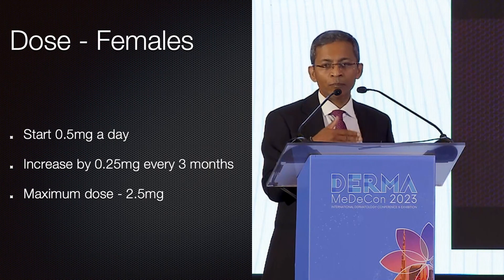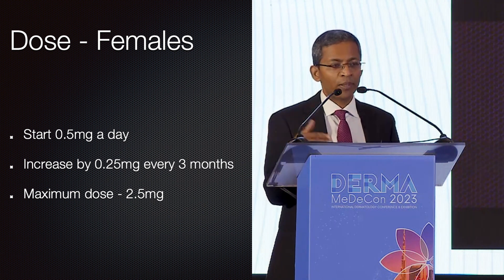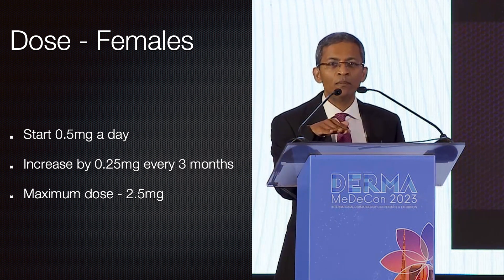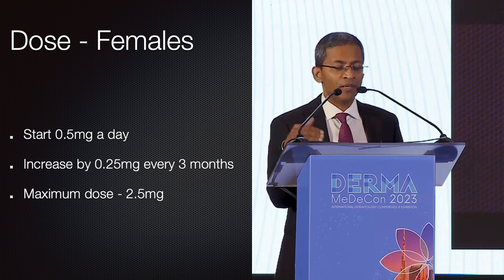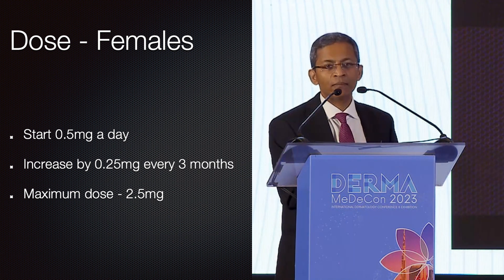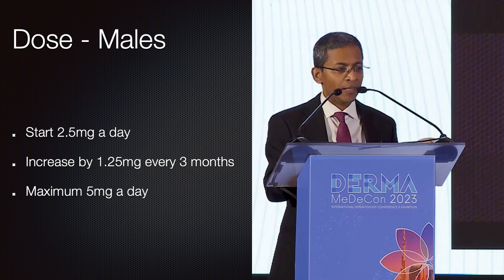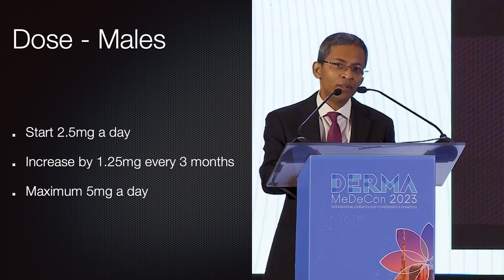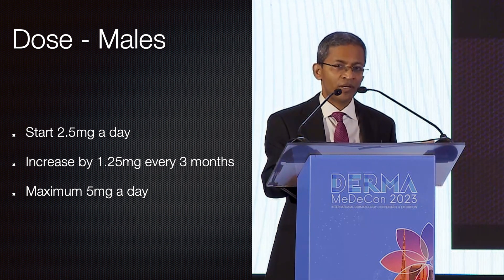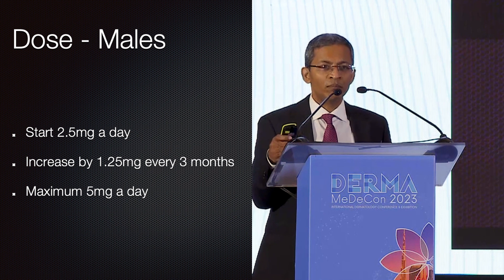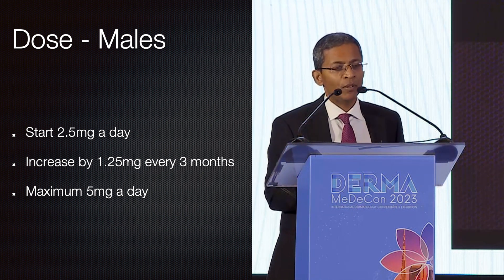For practical starting doses: in women, start at 0.5 milligrams and slowly increase by 0.25 milligrams every three months — though in my practice I tend to start at 1 milligram per day and increase by 0.5 milligrams until reaching a maximum dose of 2.5 milligrams for women. In men, start higher at 2.5 milligrams per day, then increase by half a tablet every three or four months — from 2.5 to 3.75 and finally to 5 milligrams per day. So over about nine to twelve months you would have titrated from the bottom to the top dose.